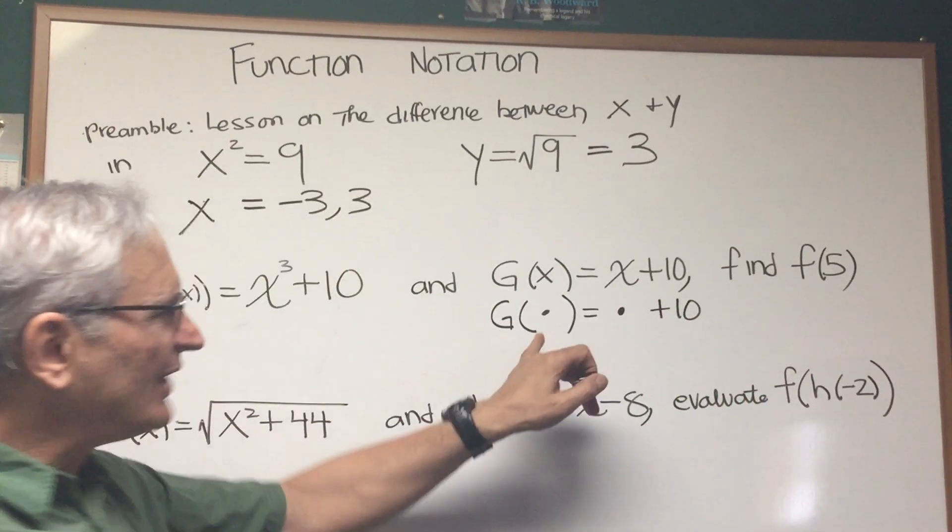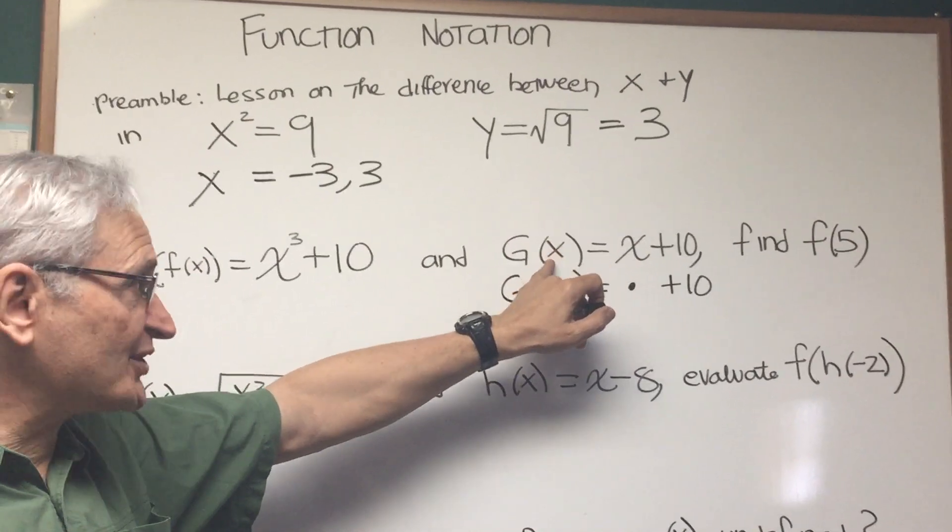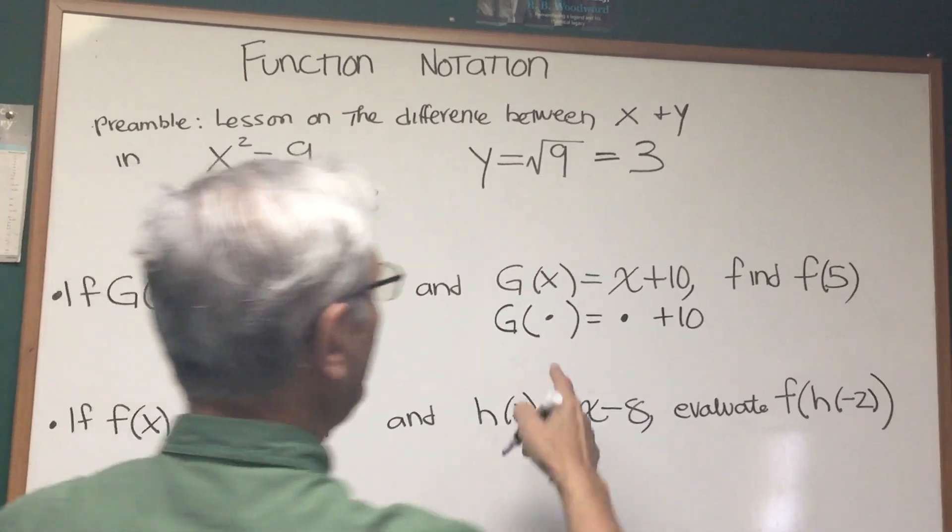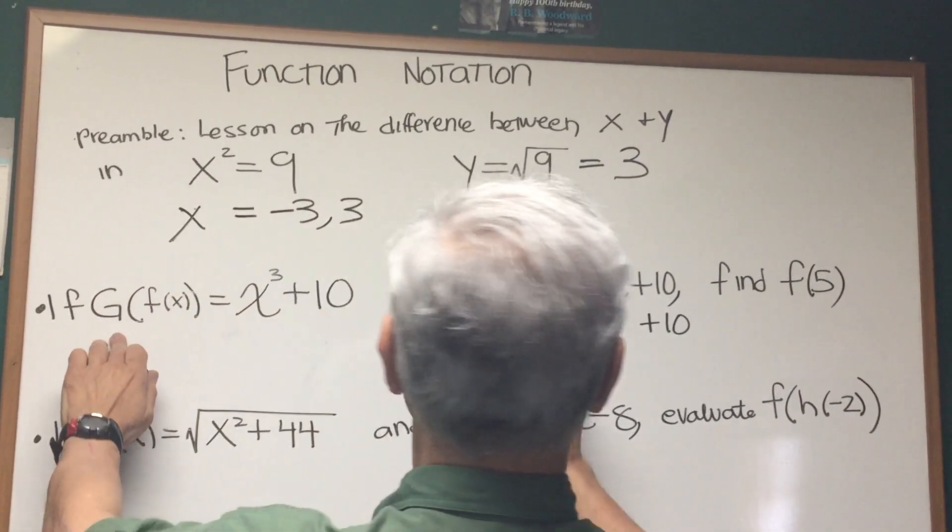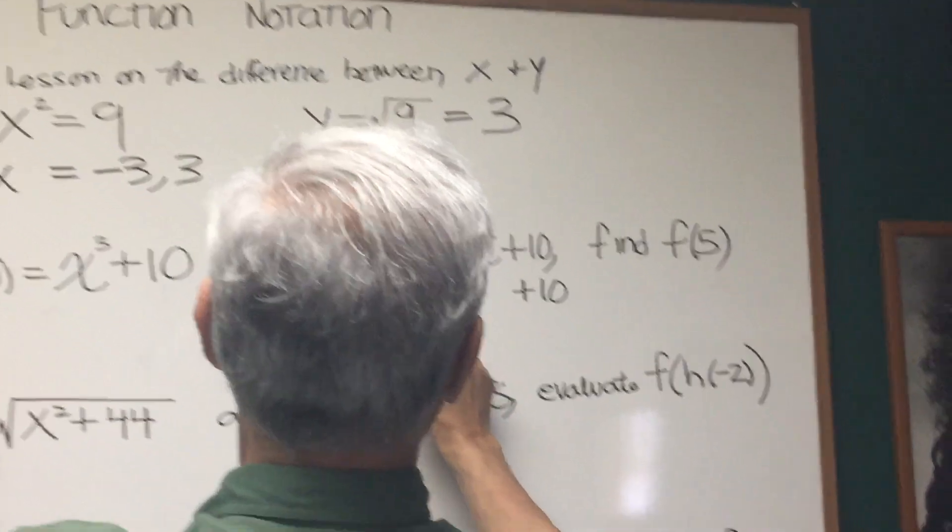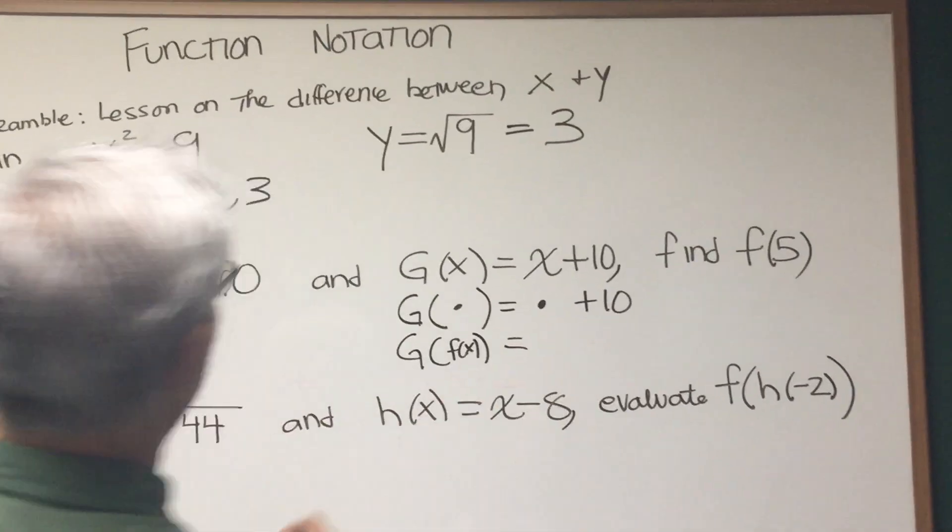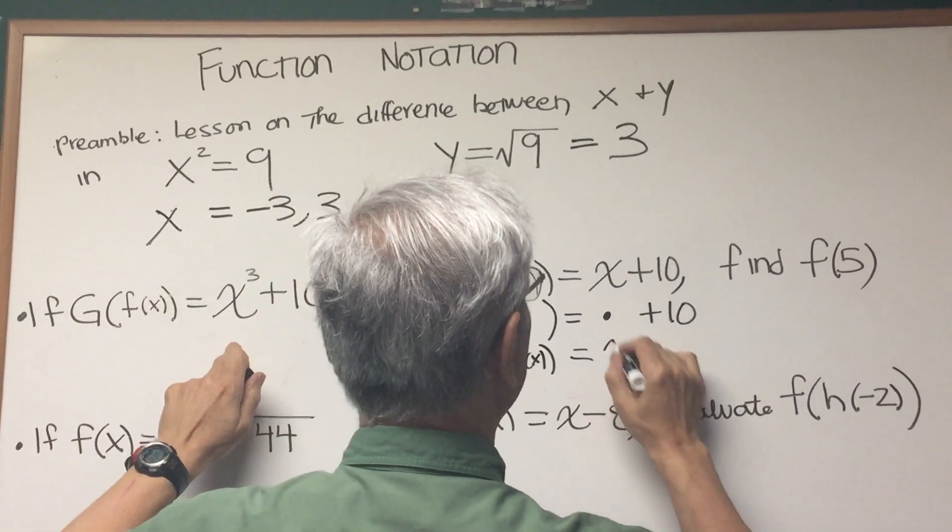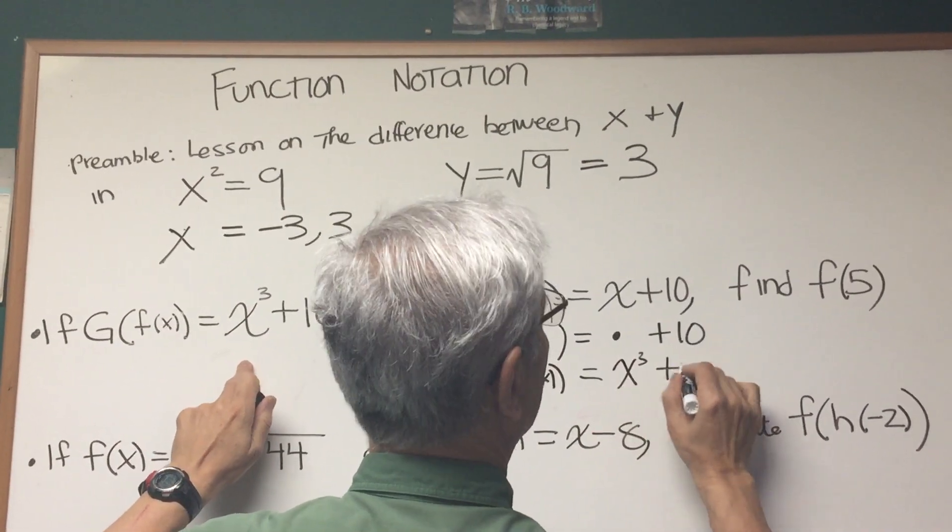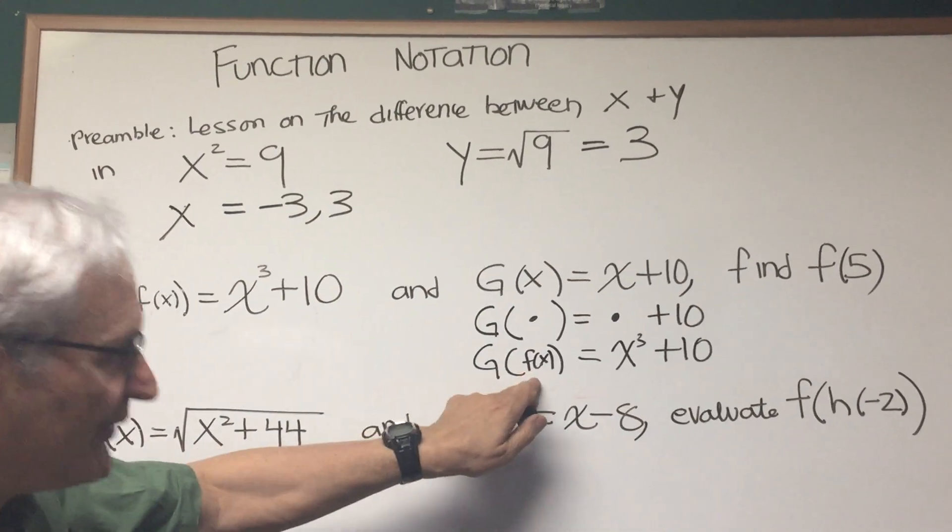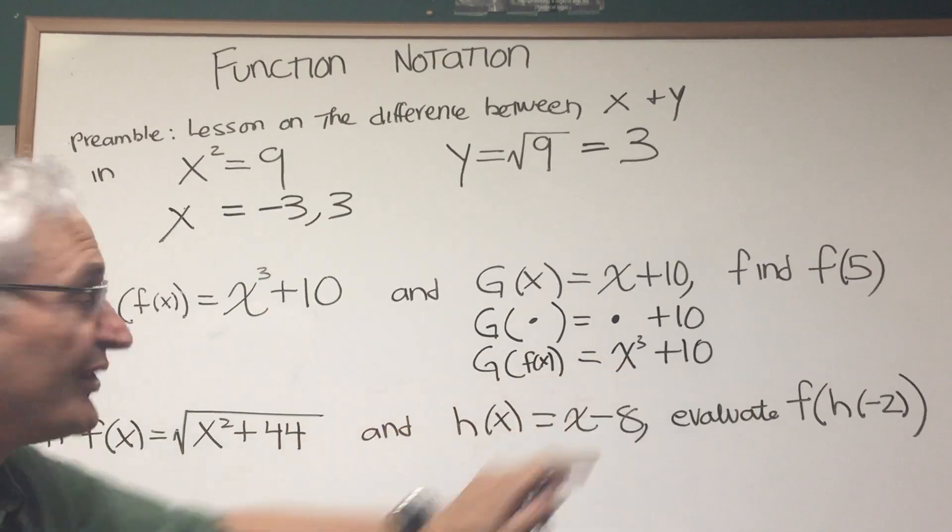Whenever we replace the dot with, whatever we replace x with on the left, we're going to replace x with on the right. So what if we have, let's look at this expression here. Let's replace the dot with f of x. And what do we replace the dot with on the right side? Then we see that's equal to x cubed plus 10. Well, what does this lead us to conclude? f of x is equal to x to the third power.